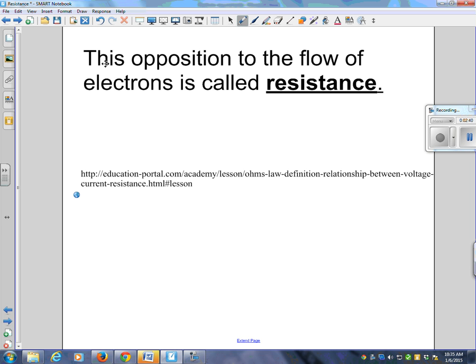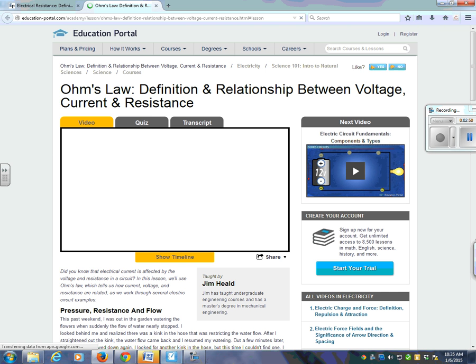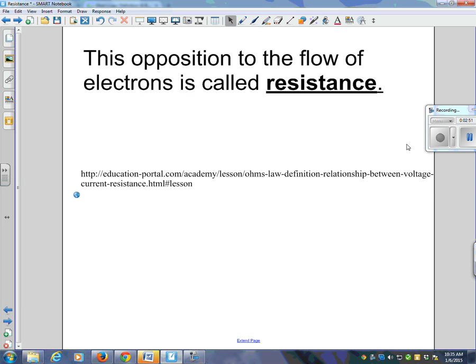This opposition to the flow of electrons is called resistance. That's what resistance is. The opposition to the flow of electrons is called resistance. And what is it measured in? Measured in ohms.